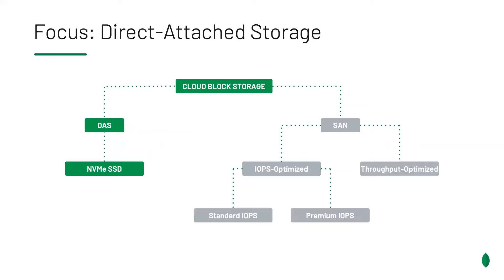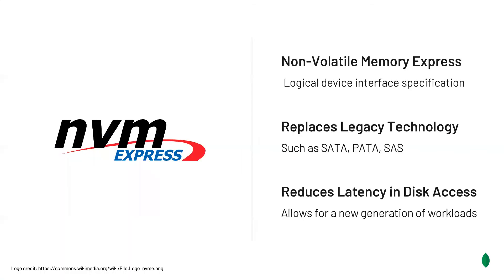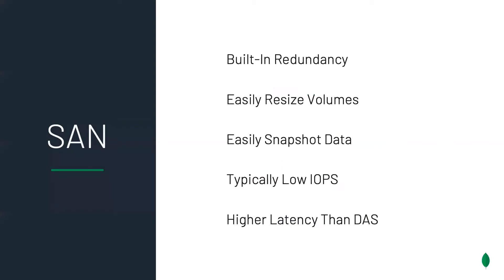We can organize cloud block storage into a neat matrix. Direct attached storage features low latency and high IOPS, as the disks are physically inside the server enclosure, but that makes redundancy difficult — because the moment the server is down, storage is unavailable. The backup process is challenging, and it's difficult to resize volumes. Storage is typically not heavily virtualized. There has recently been a new device interface specification called NVMe — non-volatile memory express — which replaces legacy technology developed for hard disk drives and reduces latency, allowing direct attached storage to benefit from SSDs. The storage area network features built-in redundancy, and you can easily resize volumes and snapshot data as it's heavily virtualized. However, it features typically lower IOPS and higher latency than direct attached storage, as data is accessed over a network interface.